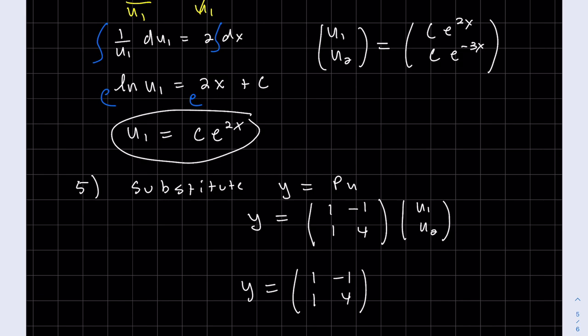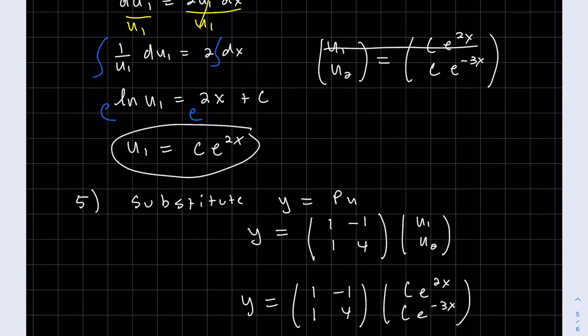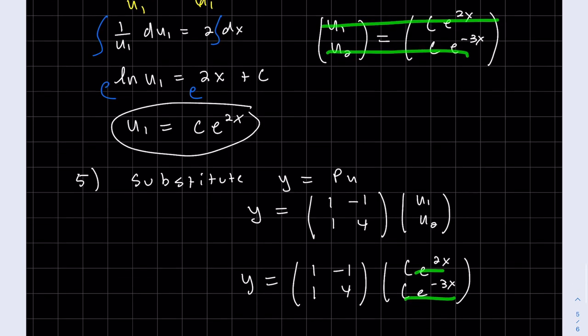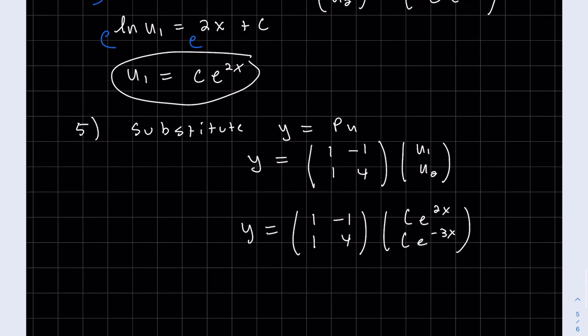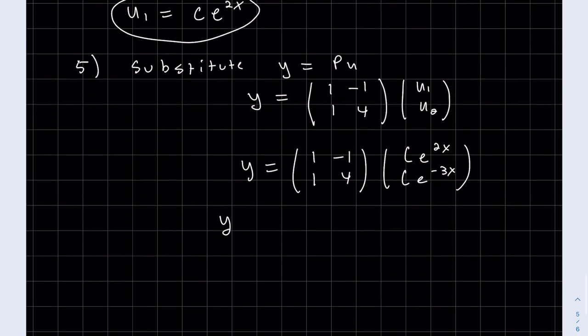So instead of u_1, u_1 is... u_2 is right there. That's u_1, right there. That's u_1, not u_2, right there. And we're done. We just got to multiply those out so we can see the solution. Oh, except that we do have an initial value. We've got to solve for the c's.